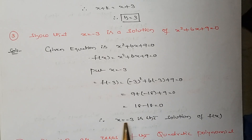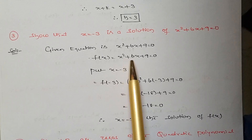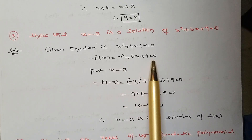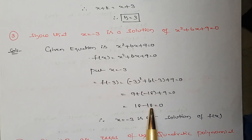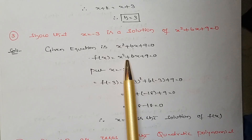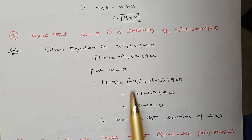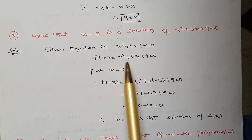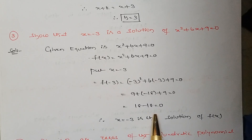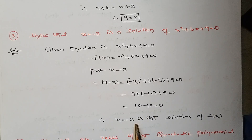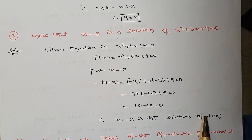Therefore, when the function's given value becomes 0, then that becomes the solution of the given polynomial. Now when you substitute x equal to minus 3 in the given polynomial, we got the result 0. Therefore, that value x equal to minus 3 is a solution of the given polynomial.